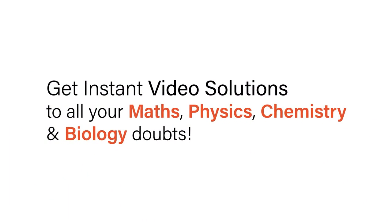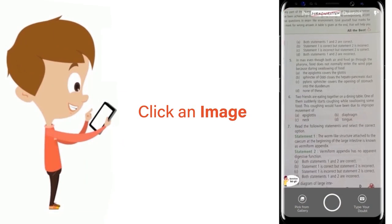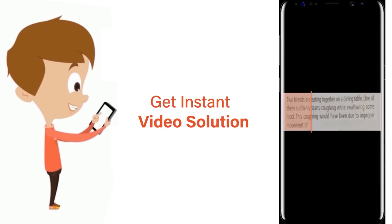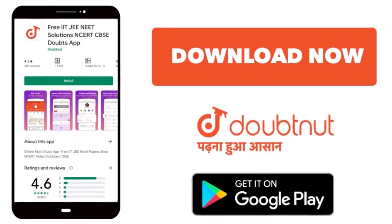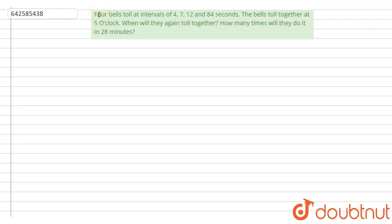With Doubtnet, get instant video solutions to all your math, physics, chemistry, and biology doubts. Just click the image of the question, crop it, and get instant video solution. Download Doubtnet app today. Hello everyone, the question is: four bells toll at intervals of 4, 7, 12, and 84 seconds. The bells toll together at 5 o'clock. When will they toll again together, and how many times will they do that in 28 minutes?